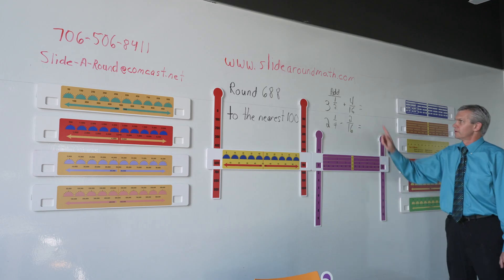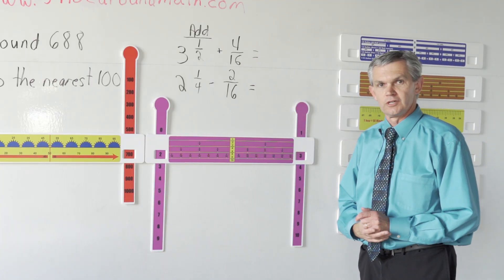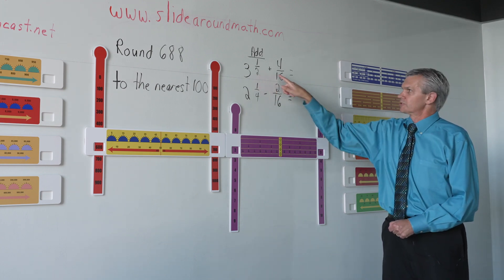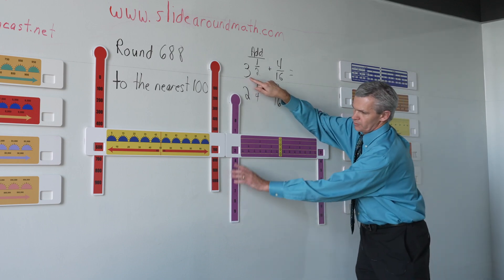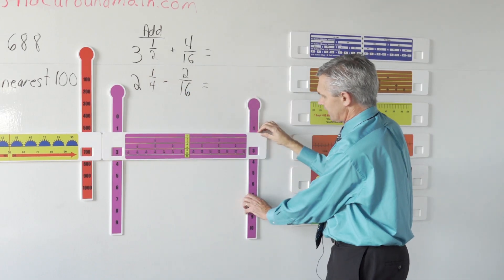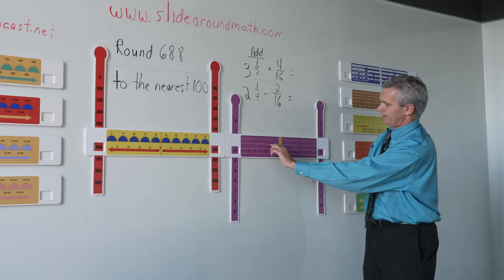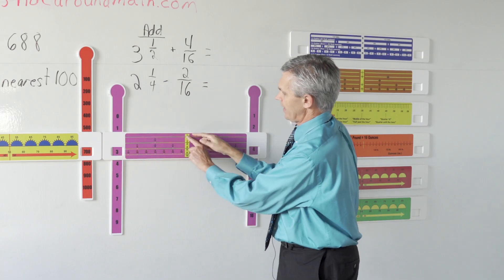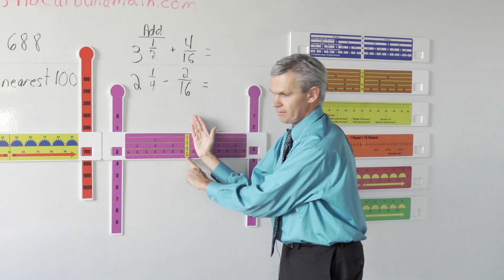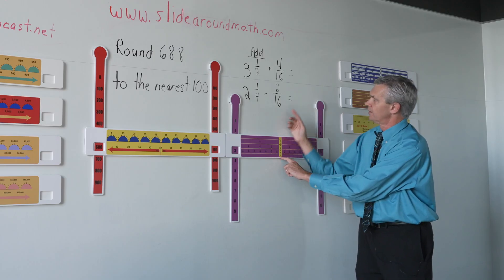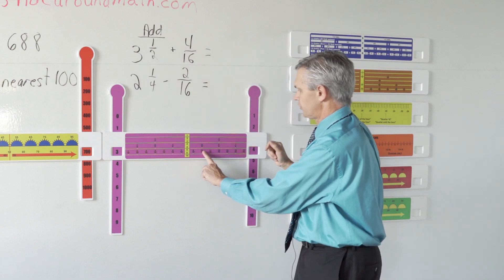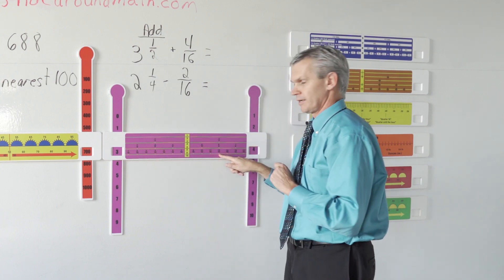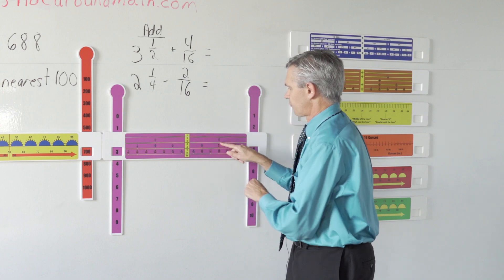The next manipulative I want to share is adding and subtracting fractions without paper and pencil. The first problem is three and one half plus four sixteenths. Do the whole numbers first — move the slide on the left to three, the slide on the right to four. Each line, imagine as a piece of string cutting halves, fourths, eighths, and sixteenths. You drop straight down because eight sixteenths is the same as one half. Then we add four sixteenths: one, two, three, four. Some students would say three and twelve sixteenths, but the best answer is three and three fourths.